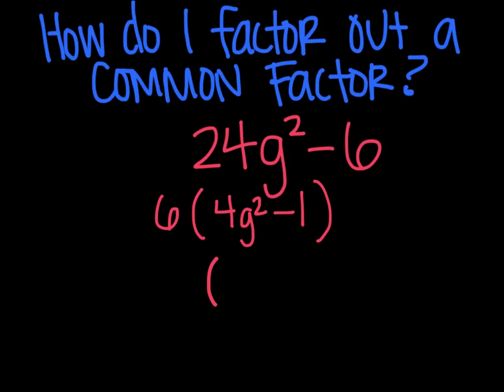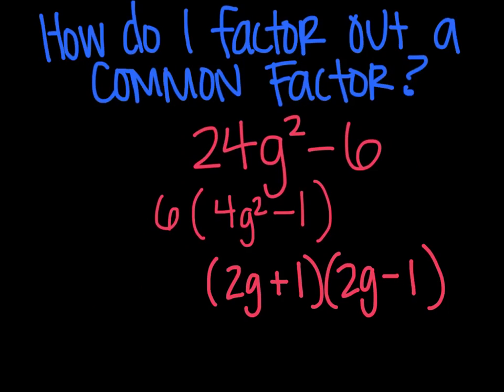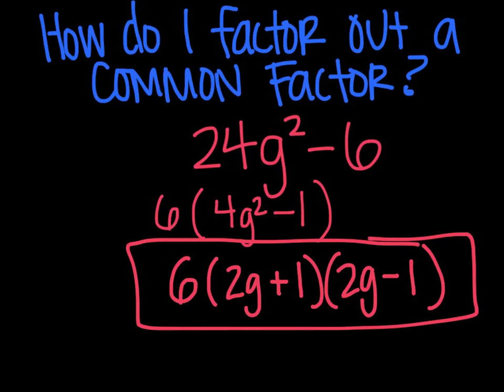The perfect square for 4 would be 2g and 2g, and then the difference, so plus and minus. Then 1² is going to give you your 1. You can't forget about that 6 there that you factored out in the beginning. So this then becomes your final answer.